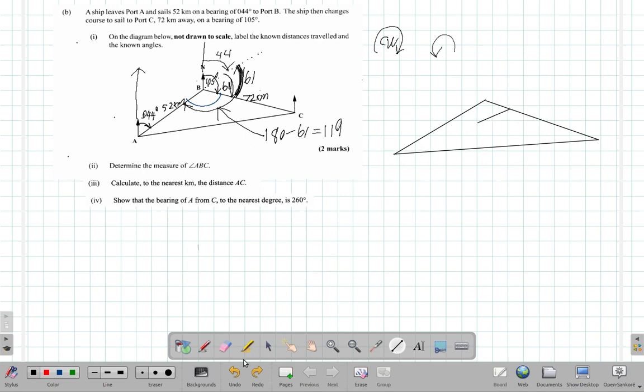I know that this angle here is 119 degrees. This is B, this is A, this is C.